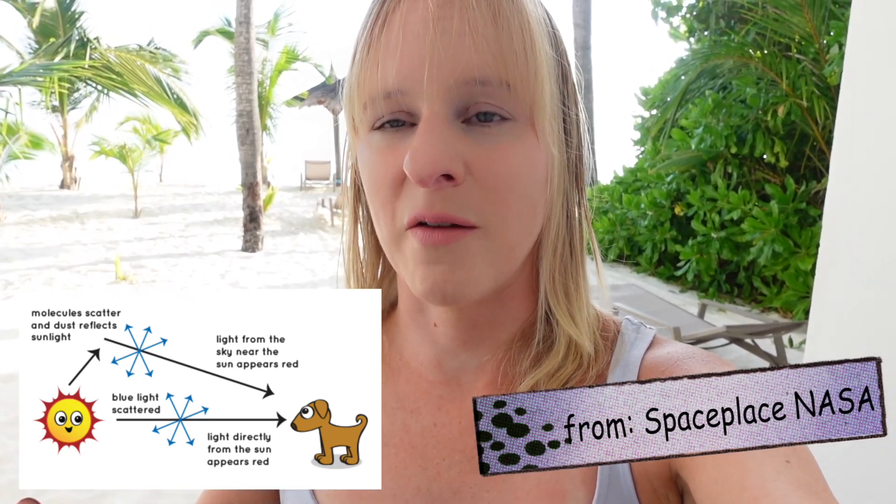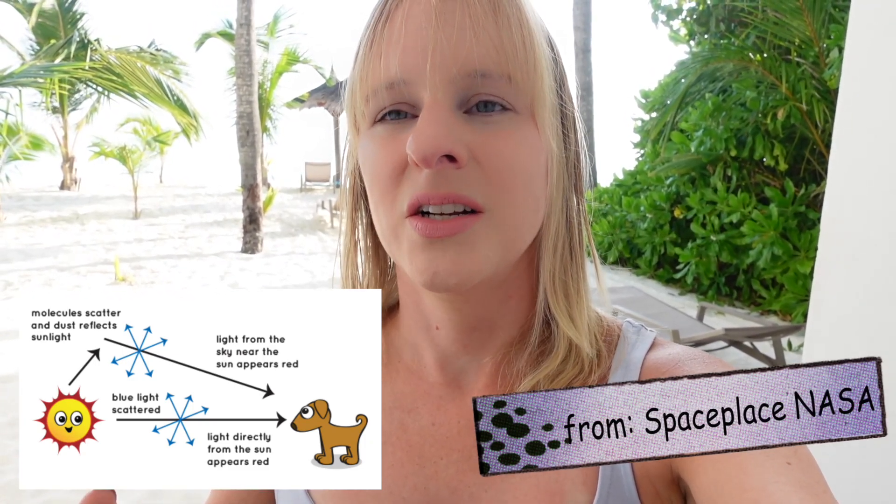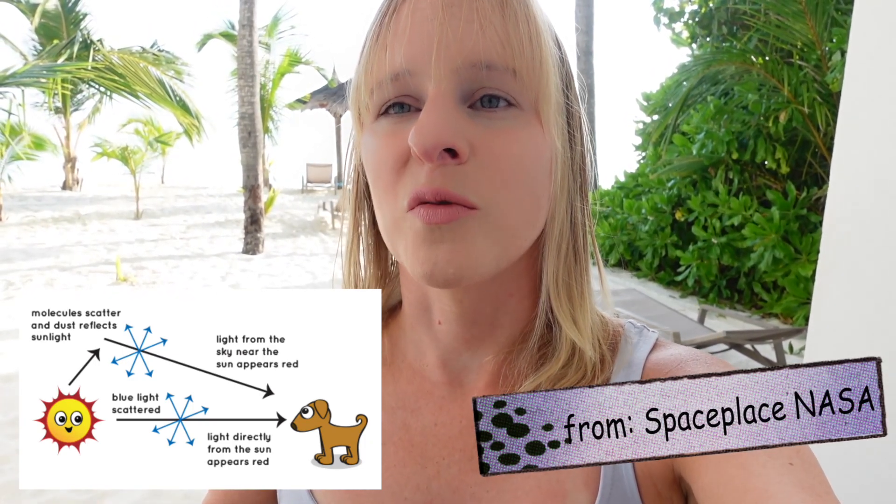It's different though when the sun starts to set, because it's not above you — it goes lower and it has to travel more. So you see more of what's not scattered the most. And because red is scattered less, you see more of that actually.